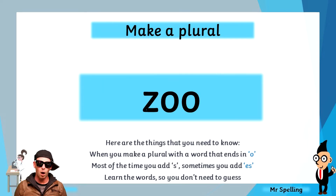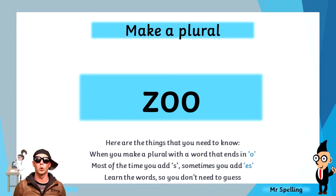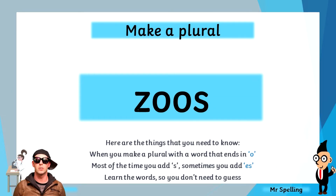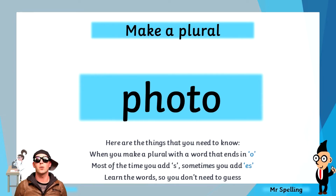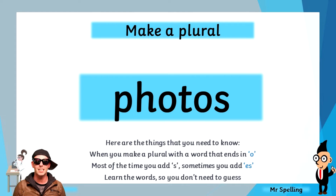Now we are going to apply our spelling rule to make some plurals. Our first word is zoo. Zoo ends vowel O, so what do we do? We add an S — or if you're guessing, most of the time you can just add an S. The plural of zoo is zoos. Our next word is photo. To make photo plural, shortened words just add an S — or most of the time you can just add an S. The plural of photo is photos.